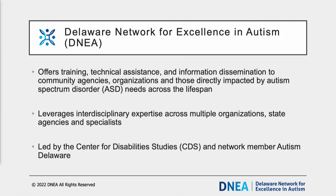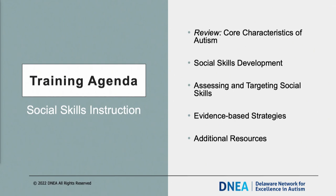The Interagency Committee on Autism, or ICA, is made up of various disciplines and agencies, family members of individuals with autism, and a person with autism, and oversees the work being done within the DNEA. Today we will review the core characteristics of autism, discuss social skills development, consider ways of assessing social skills, explore evidence-based strategies, and review additional resources.